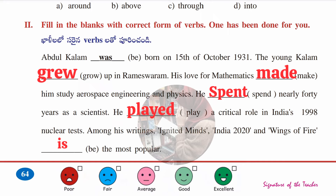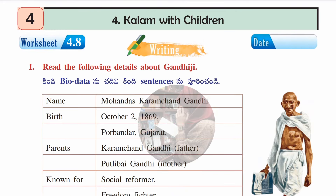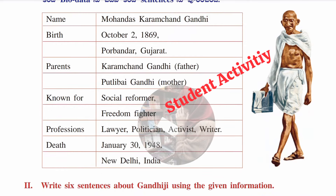Worksheet 4.8 is a writing section. The first section gives details of Mahatma Gandhi as a bio data. You need to go through and remember his full name, where he was born, his parents' names, what he was known for, his profession, and when he died. This is a student activity.